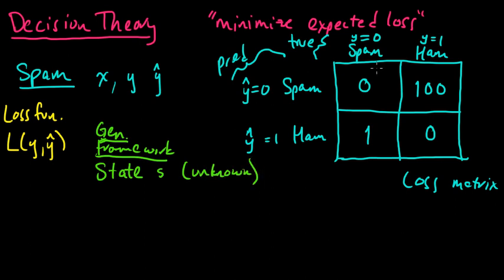So in our example that would be like whether it was actually a spam or a ham email. And then you get some observations. That would be, for example, in our example, that would be like x, you get to see the email. And then you have to make some decision or you have to take some action, and let's call that little a.